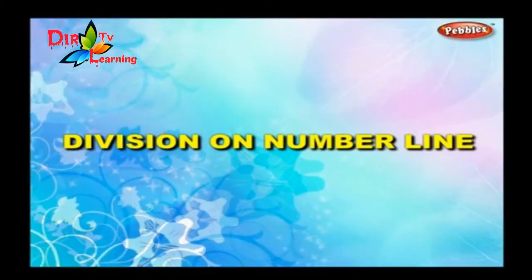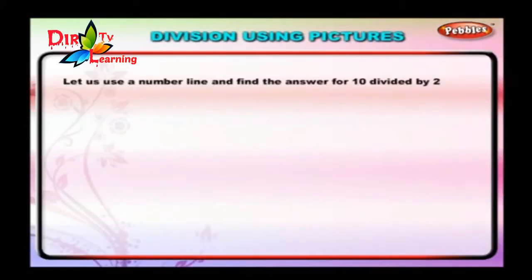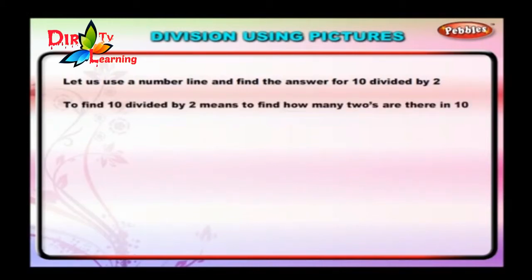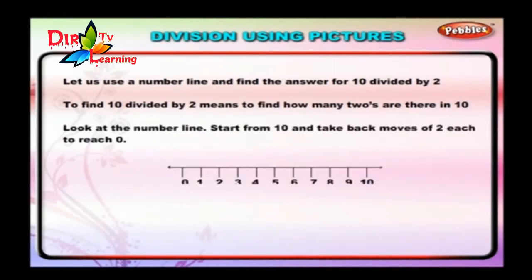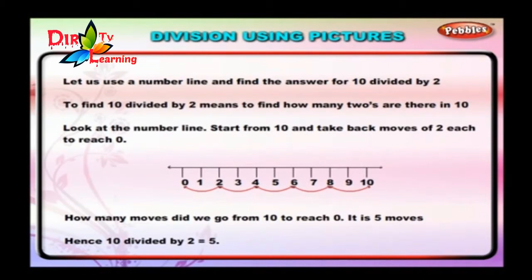Division on Number Line. Let us use a number line and find the answer for 10 divided by 2. To find 10 divided by 2 means to find how many 2's are there in 10. Start from 10 and take back moves of 2 each to reach 0. How many moves did we go from 10 to reach 0? It is 5 moves. Hence, 10 divided by 2 is equal to 5.